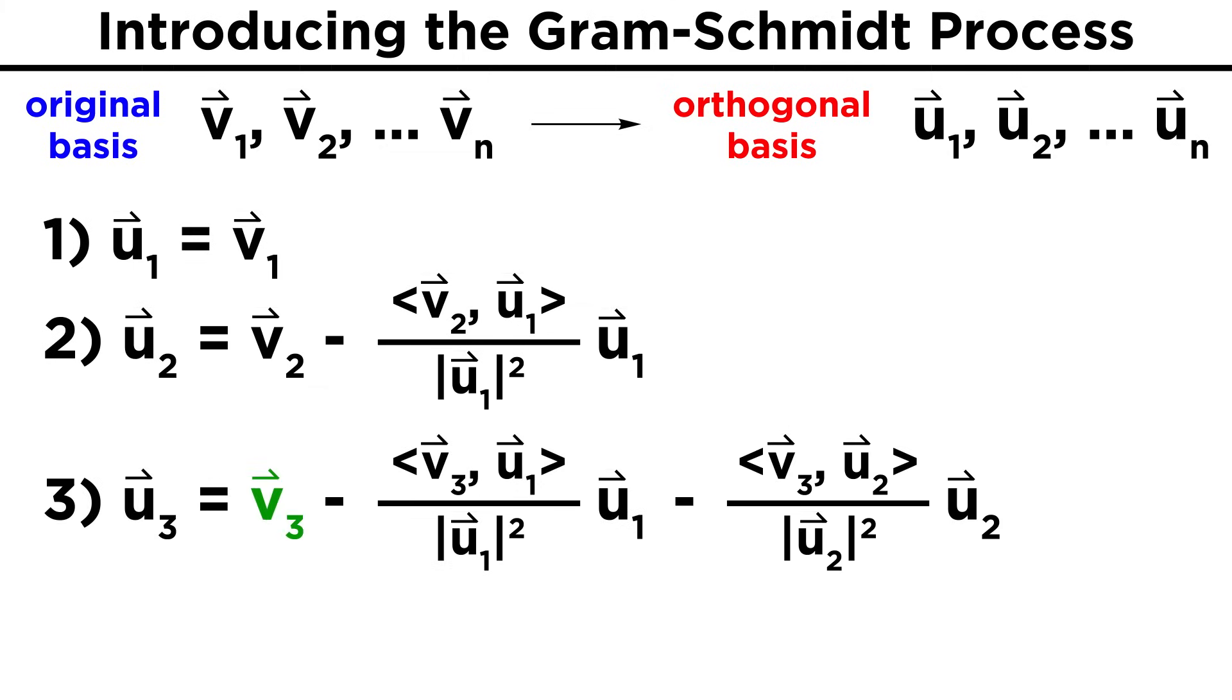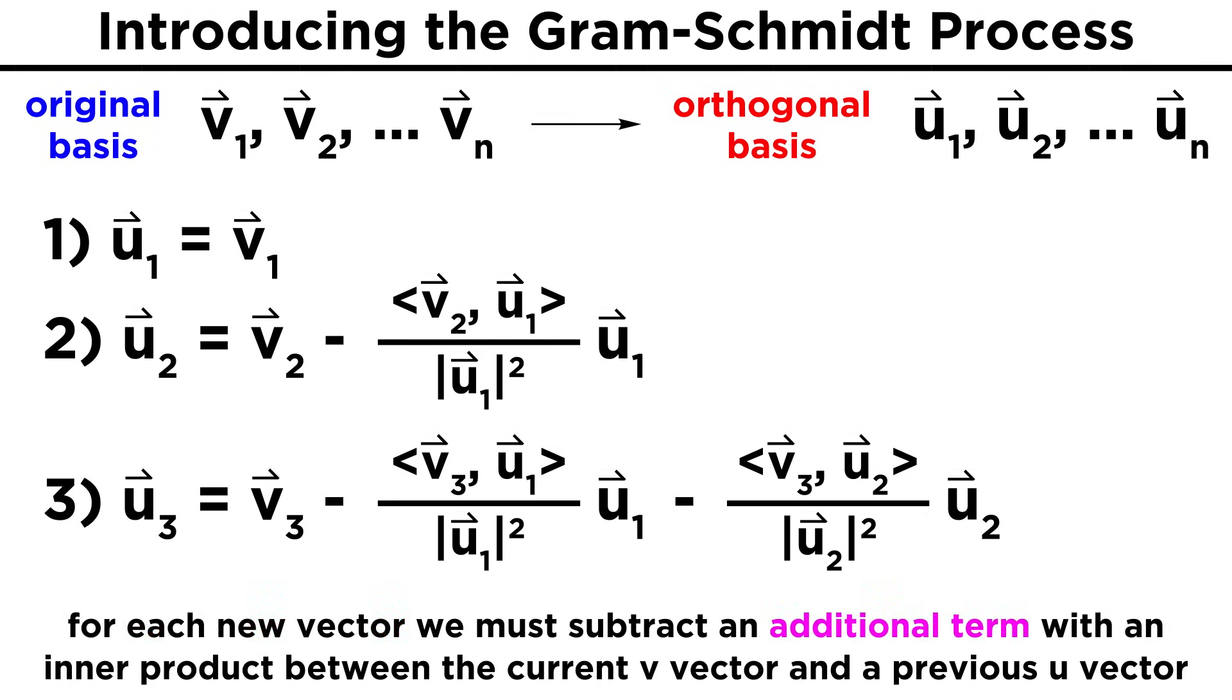Then the third step will be to take the vector v3 and subtract a similar term. The only difference is that now we take the inner product between v3 and u1 in the numerator, and then we also subtract another term, which is the inner product between v3 and u2 divided by the length of u2 squared times u2. At this point you may notice a pattern emerging. For each new vector, we must subtract an additional term that involves the inner product of the current v vector with each previously found u vector, so we will need one more such term for each vector.